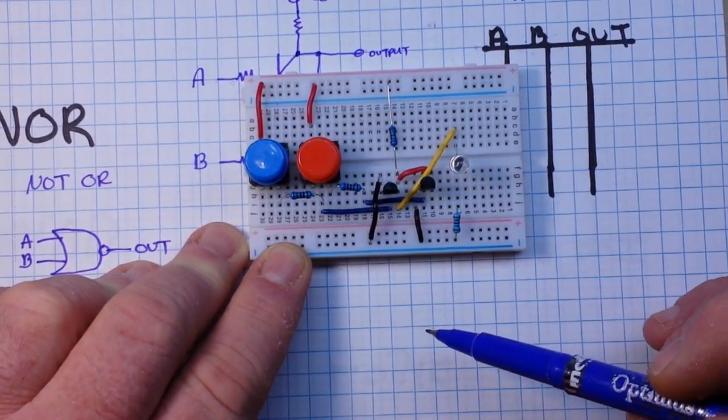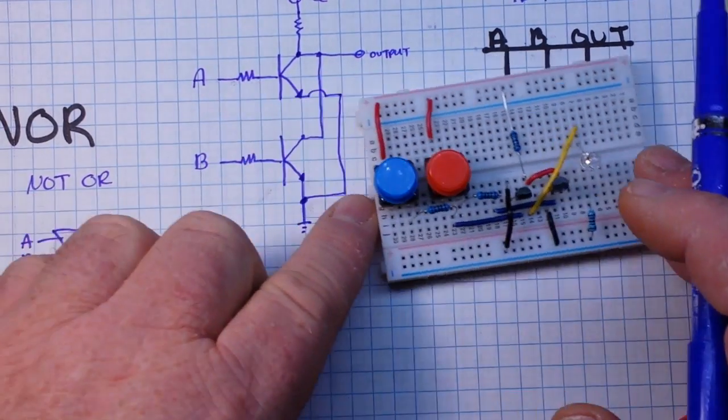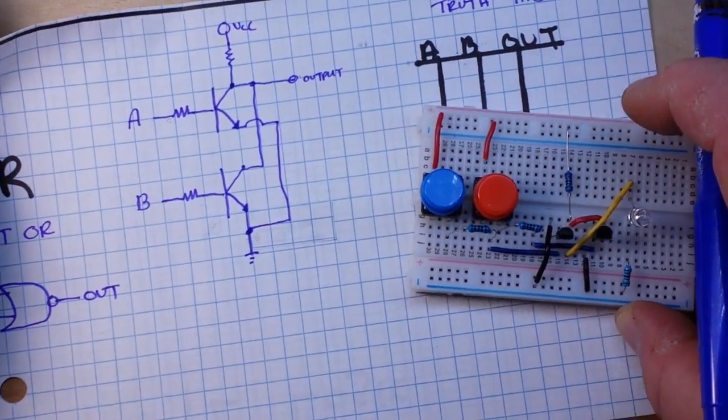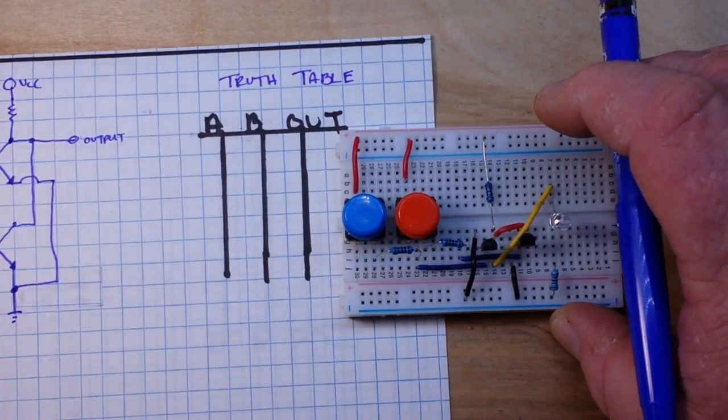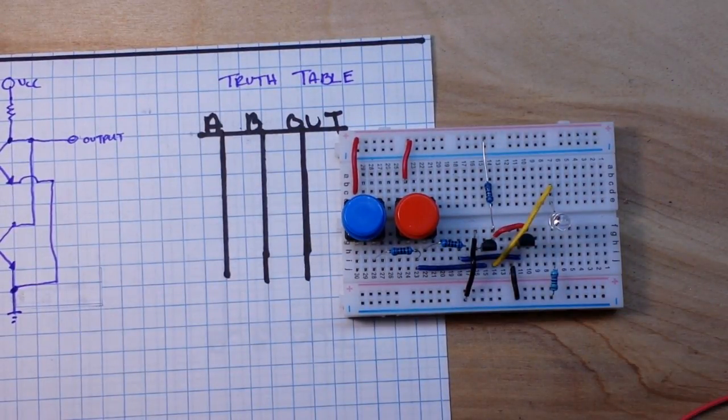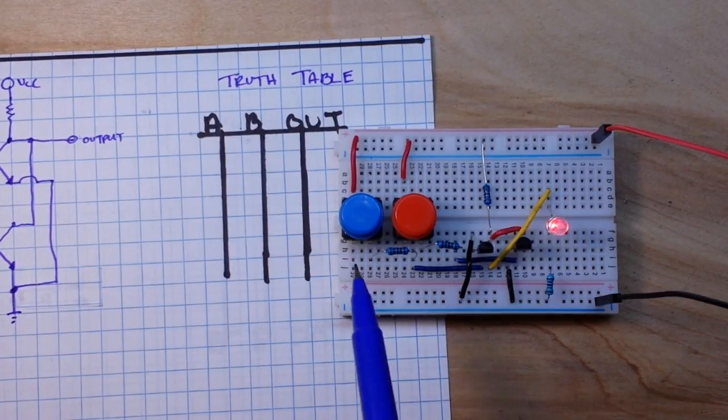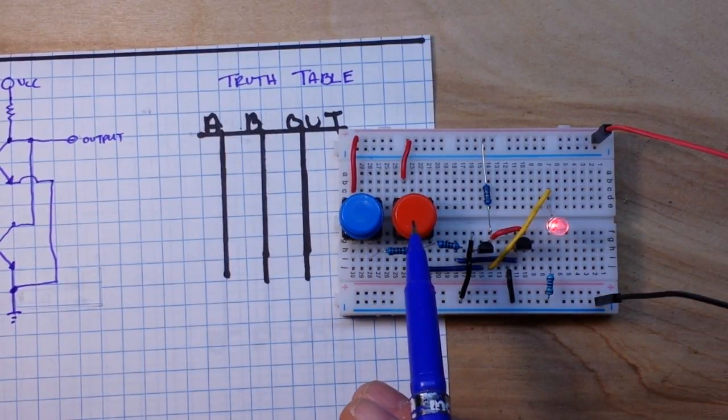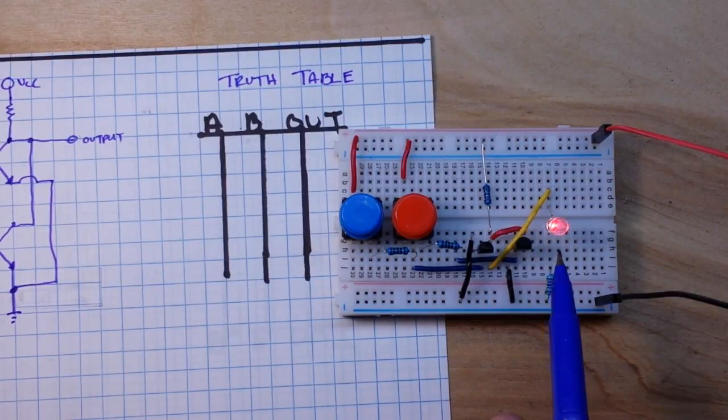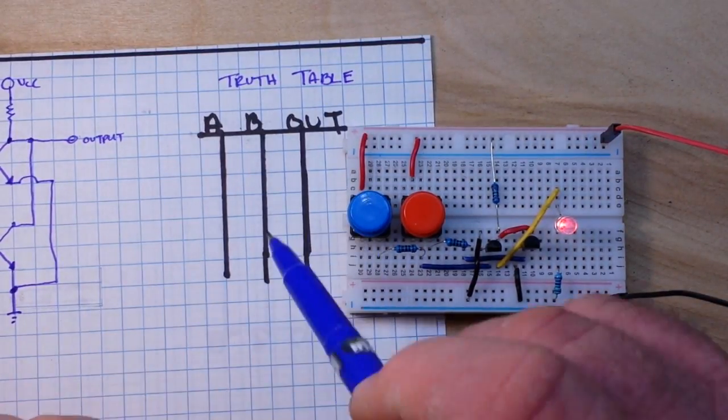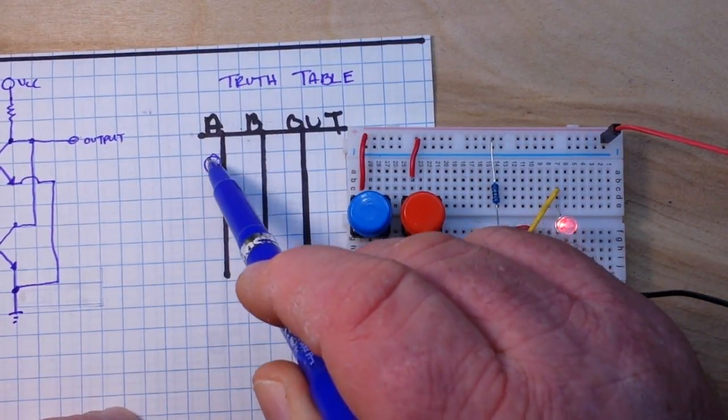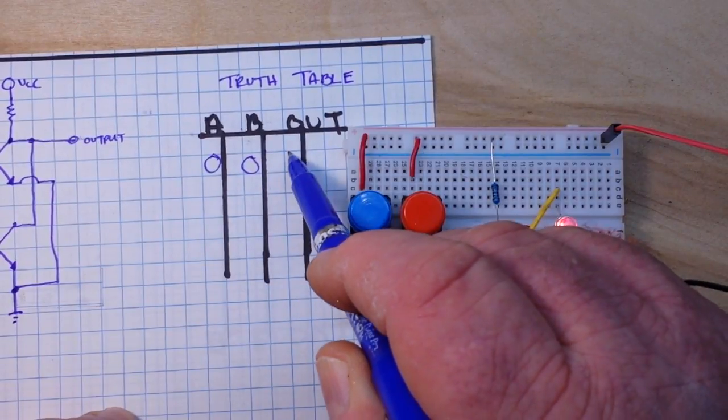So let me put some power to this one and we will put the truth table to it and see how it behaves. Alright we are powered up. Both inputs are 0, so our output is true. So 0, 0, 1.